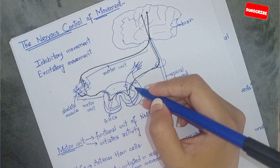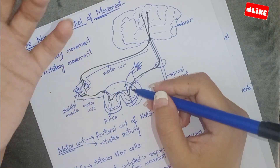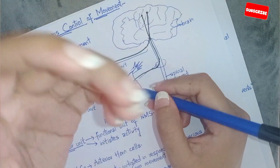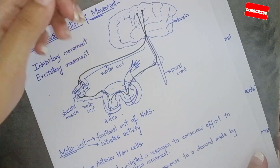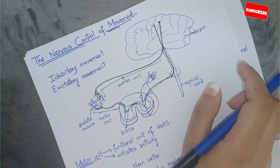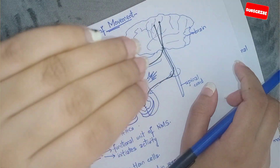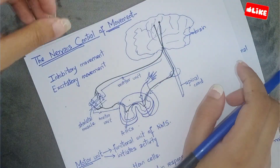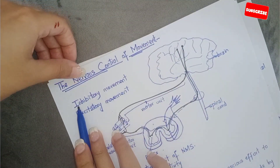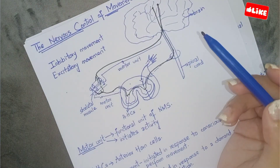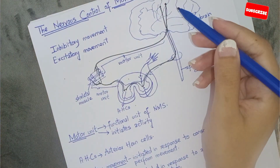We withdraw our hand in response to a painful stimulation — this is an inhibitory movement. When we withdraw our muscles, our muscles were contracted to keep the position. This is an inhibitory movement, and the response is also a motor response.